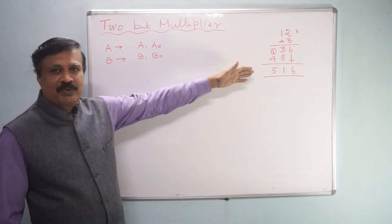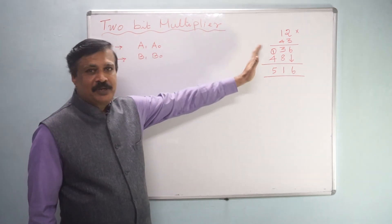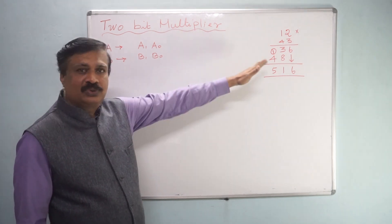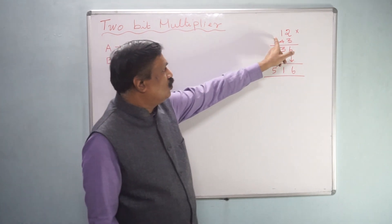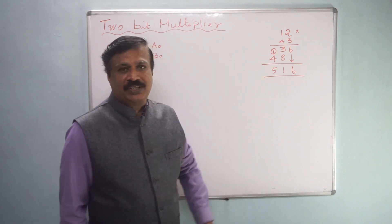I have given a simple example, decimal multiplication for 2-digit. 12 is multiplied by 43. I will simply tell how we are doing.